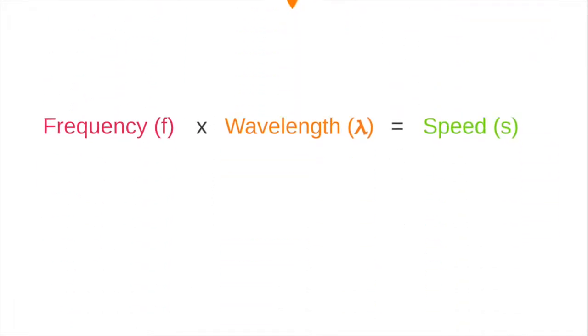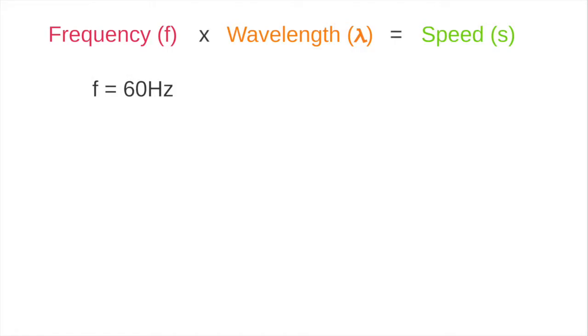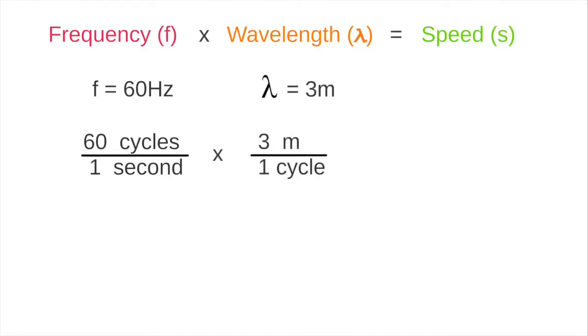Let's look at an example. Say the frequency of a wave is 60 Hz, and the wavelength is 3 meters. I'm going to write out the full meaning of the units to make it clear. 60 Hz means 60 cycles per second. And a wavelength of 3 meters means 3 meters per cycle. When we multiply, the cycle units cancel, giving 180 meters per second.